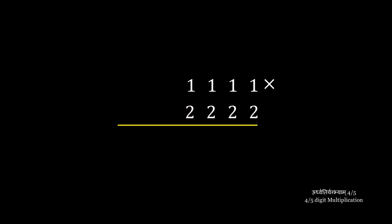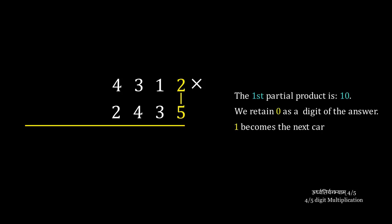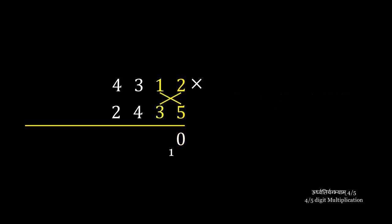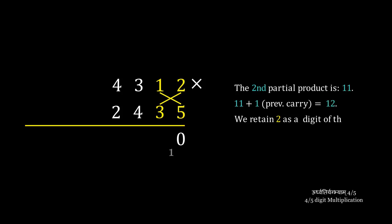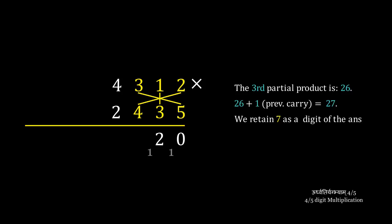An example will make this a little clearer. The first partial product is 5 times 2, that is 10. We retain 0 as a digit of the answer and 1 becomes the carry. The second partial product is a cross-multiplication of the last two digits, which is 11. We add the previous carry to get 12. We retain 2 as a digit of the answer and 1 becomes the next carry. The third partial product is a cross-multiplication of the last three digits, which is 26. We add the previous carry to get 27. 7 is retained as a digit of the answer and 2 becomes the next carry.